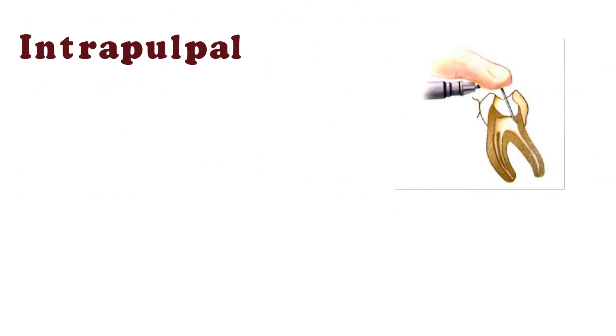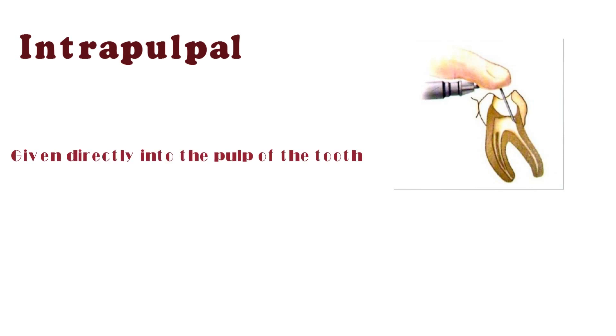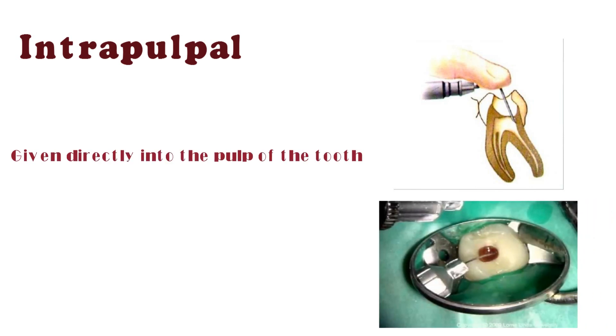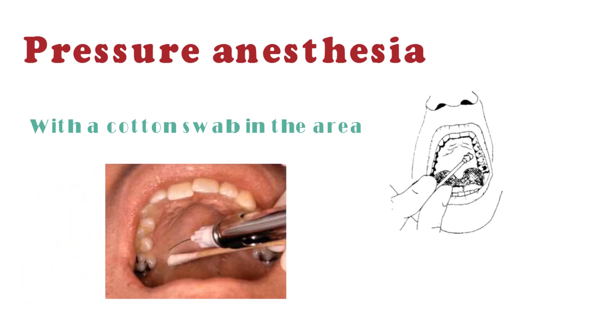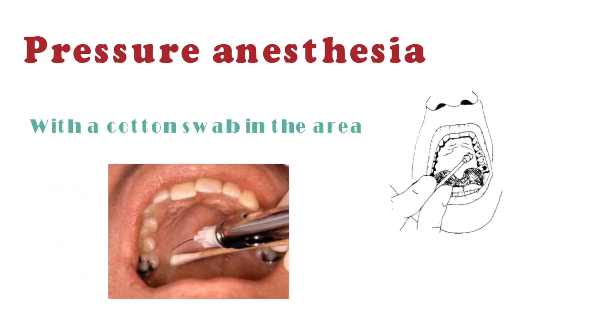Intrapulpal injection is a delivery of local anesthetic given directly into the pulp of the tooth, completely desensitizing the tooth. Pressure anesthesia uses a cotton swab in the area to distract the nerve sensation of pain when the needle enters certain areas such as the palatal tissue.